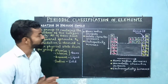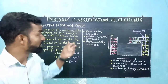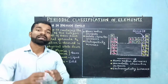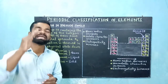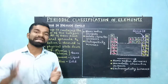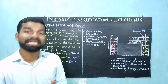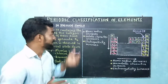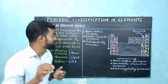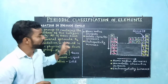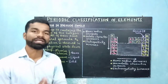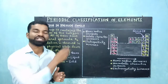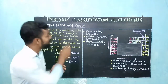Gradation is also observed in other groups. For example, if you consider the alkaline earth metals which are the group 2 elements, the reactivity goes on increasing as you go down the group. Beryllium does not react with water. Magnesium reacts with steam. Calcium, strontium, and barium react with water at room temperature but at increasing rates.